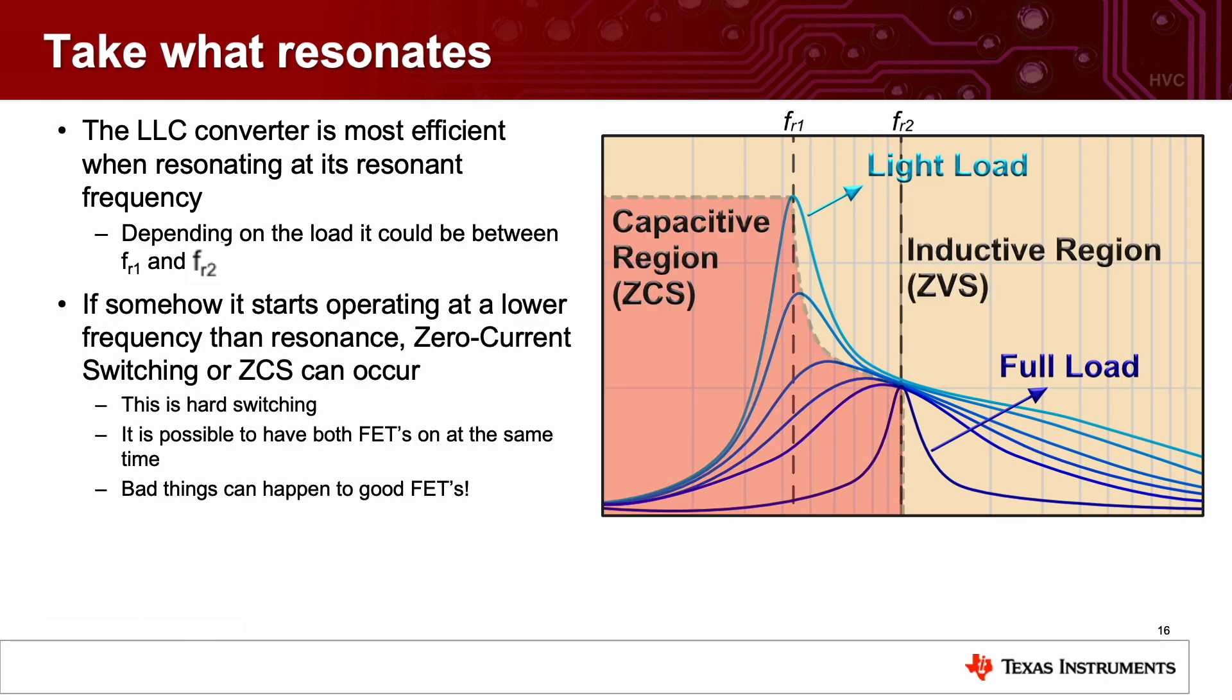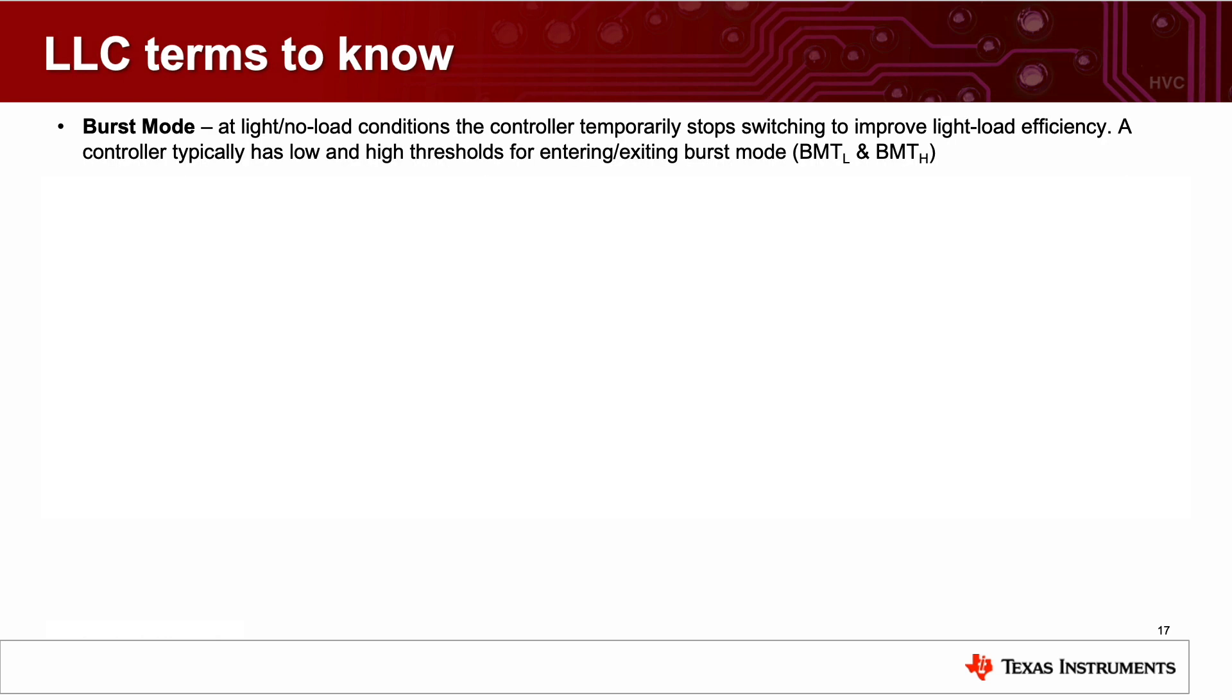If somehow the LLC converter starts operating at a lower frequency than resonance, zero-current switching can occur. This is also known as hard switching. When this happens, it is possible to have both FETs on at the same time, and bad things can happen to good FETs. When you hear the term capacitive region avoidance, this means the controller has a scheme to avoid entering the capacitive region.